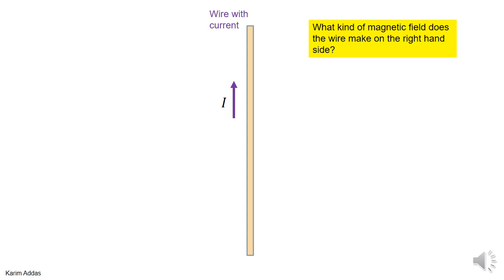Okay, this is another example of how we can find the magnetic flux. This is an infinite wire and it has a current I. So what kind of magnetic field do you think that the wire produces on the right-hand side?